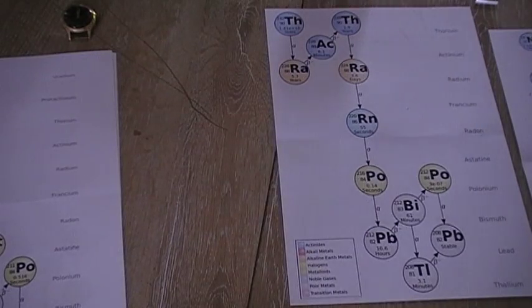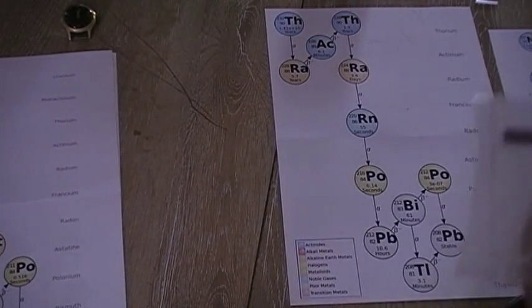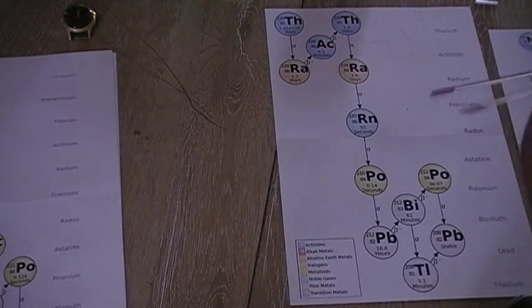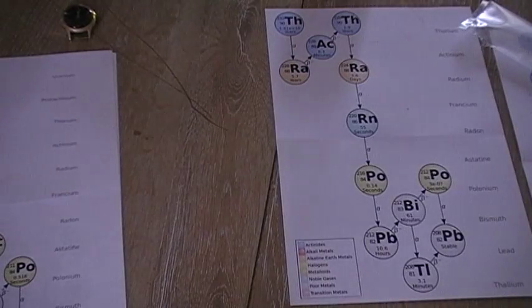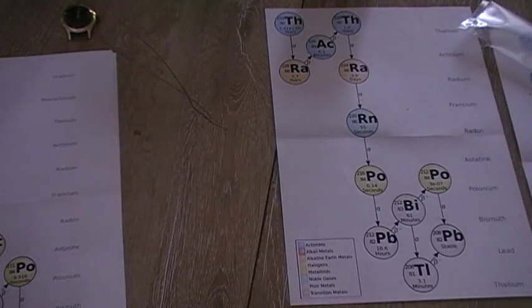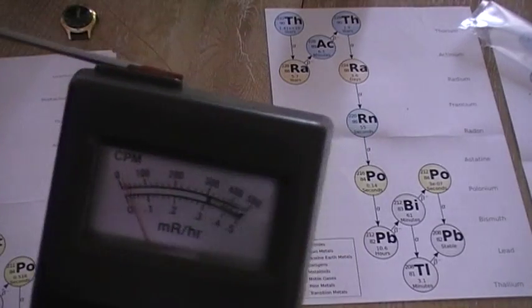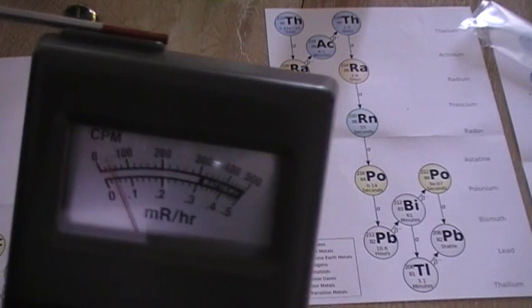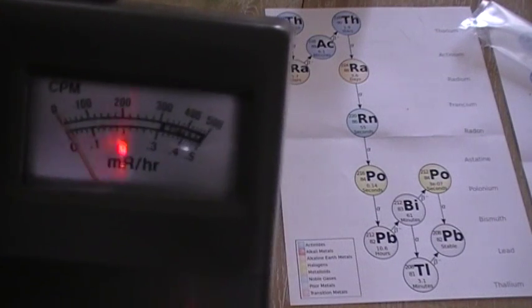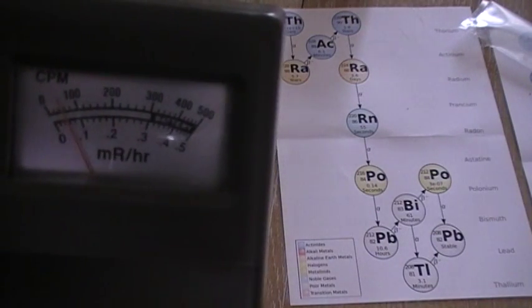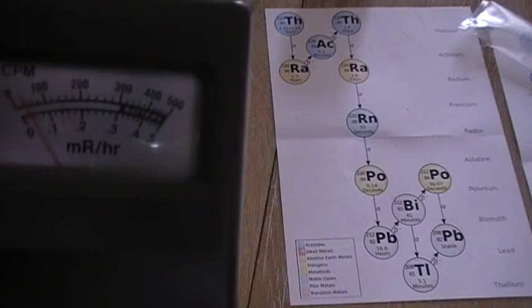And then you can see the uses of the end product. Now, one of the end product uses are these. They're thoriated welding rods, 2% thorium. So, I shall remove these from their little housing. Quite a low reading, but about two and a half times background, I'd say. We get 20 counts a minute on average round here. And that's clicking away nicely there.